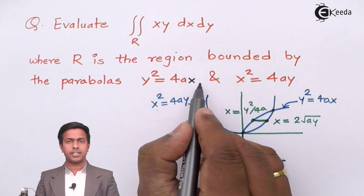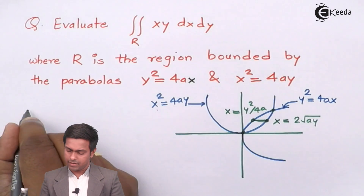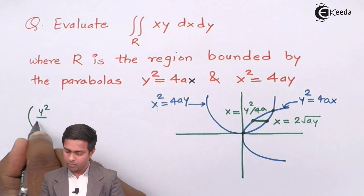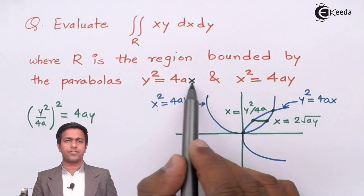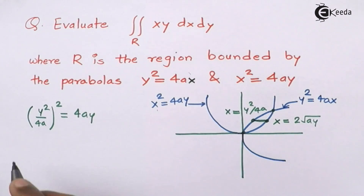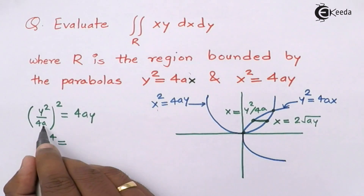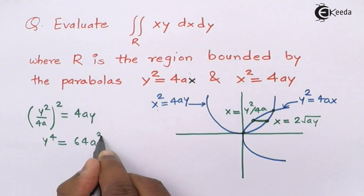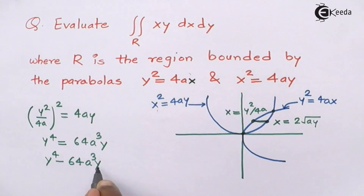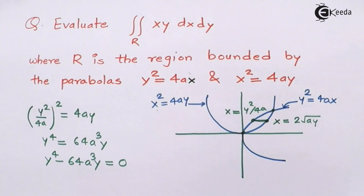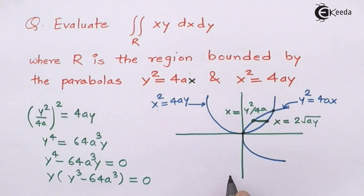From y² = 4ax, we get x = y²/4a. Substituting into x² = 4ay: (y²/4a)² = 4ay, which gives y⁴/16a² = 4ay, so y⁴ = 64a³y. Bringing to one side: y⁴ − 64a³y = 0, and factoring out y: y(y³ − 64a³) = 0.